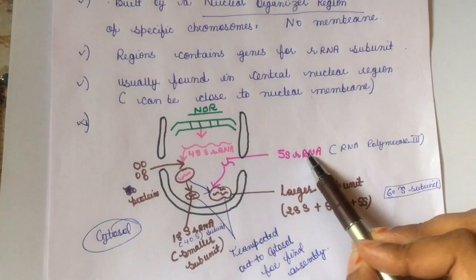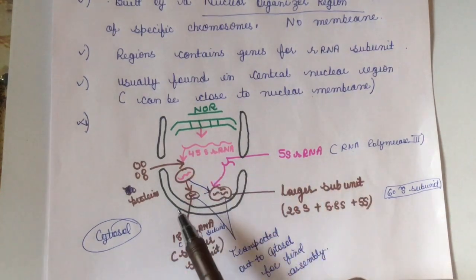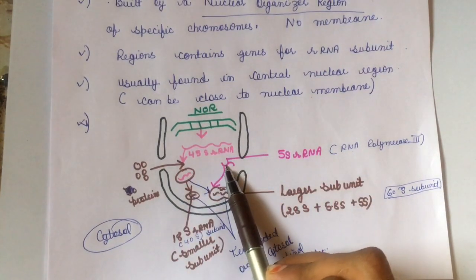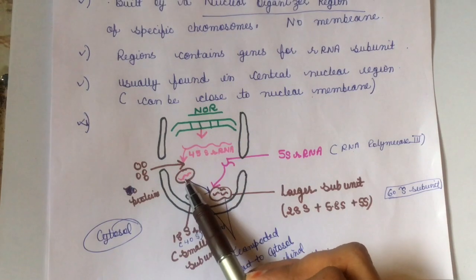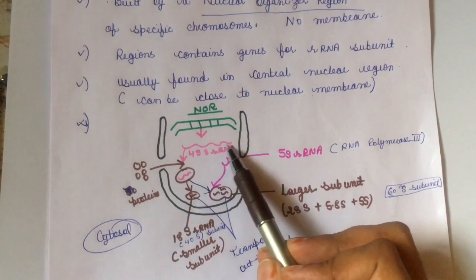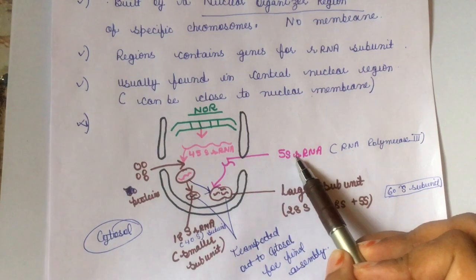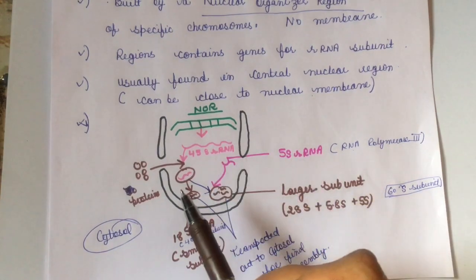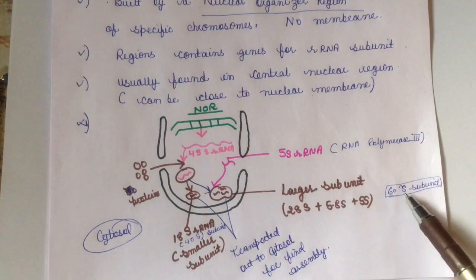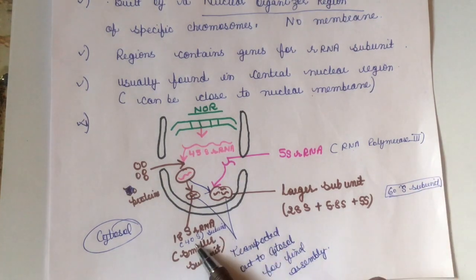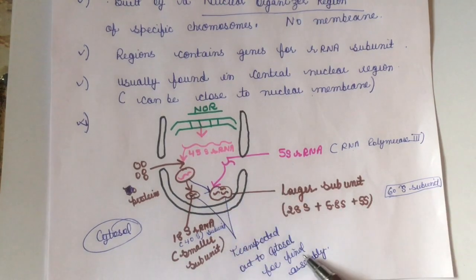The large particle seen here is an association of 45S ribosomal RNA and proteins imported from the cytosol. Importantly, 5S ribosomal RNA is not synthesized in the nucleolus but is imported. This forms the larger subunit of eukaryotic ribosomes. The larger ribosomal subunit is 60S and the smaller subunit is 40S. The 18S ribosomal RNA makes up the smaller 40S subunit. These subunits are later transported out to the cytosol for final assembly.